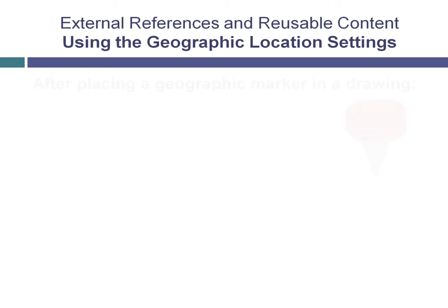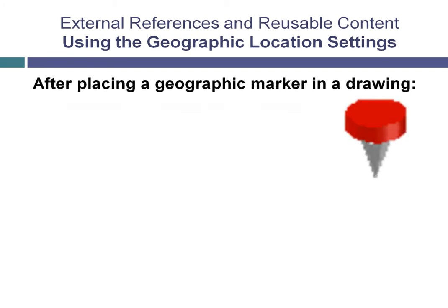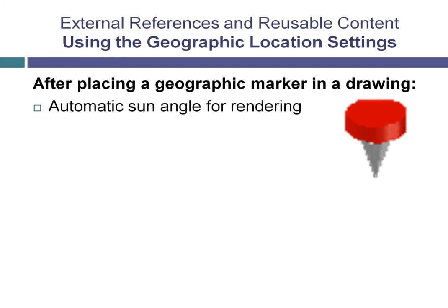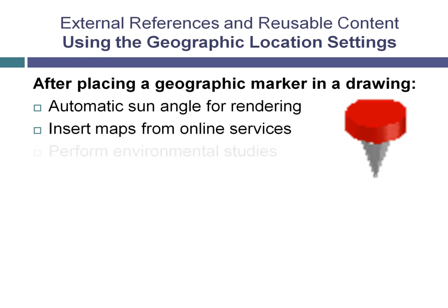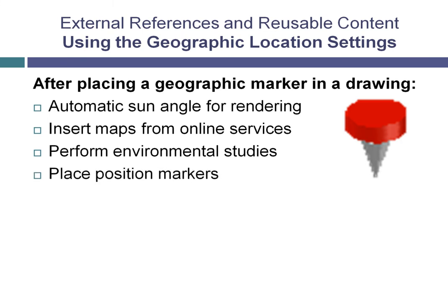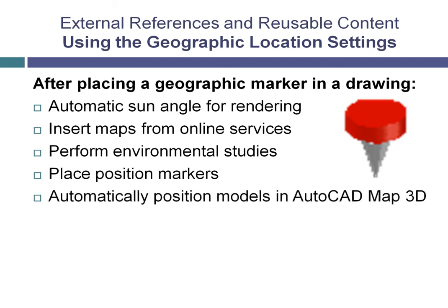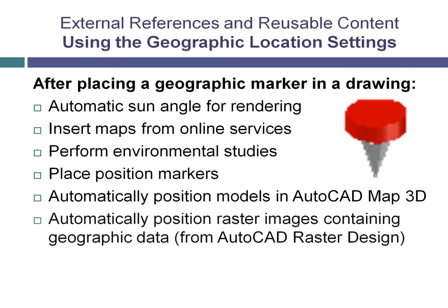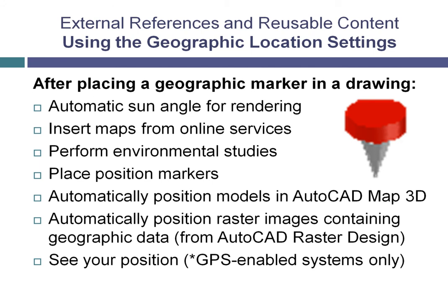Once you place a geographic marker in a drawing, you can automatically determine the angle of sunlight when you render a model, insert a map from an online map service such as Google Earth, perform environmental analysis studies, use position markers to mark geographic locations and related notes, automatically position models exported to AutoCAD Map 3D, and automatically position raster image files that contain geographic location information. In addition, if your computer has a GPS-enabled device, you can see your current position in the drawing and even mark positions as you walk around.